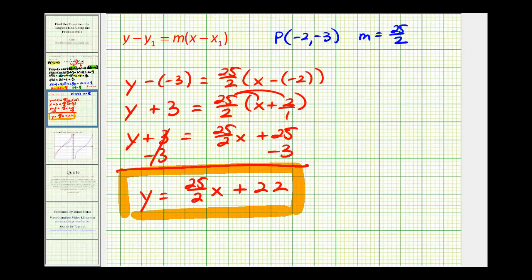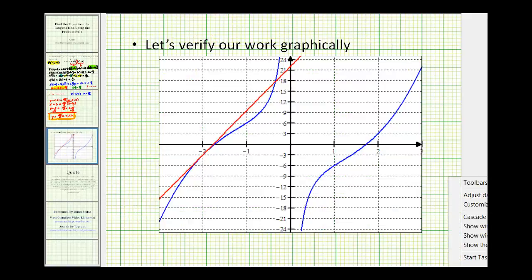Let's go ahead and verify this graphically. The blue graph is our original function. The point negative 2, negative 3 is here. Notice how the graph of our line is tangent at that point. I hope you found this helpful.